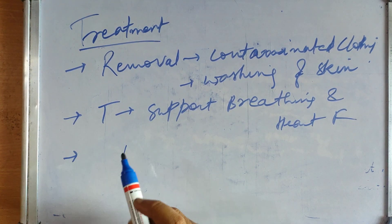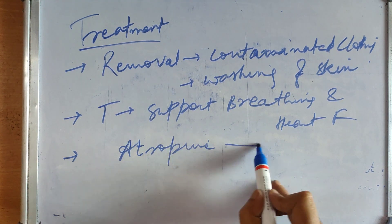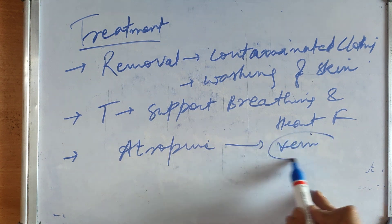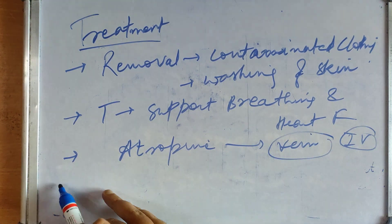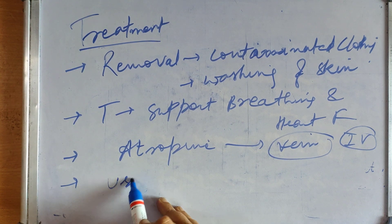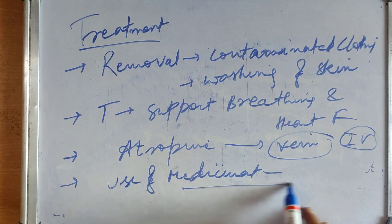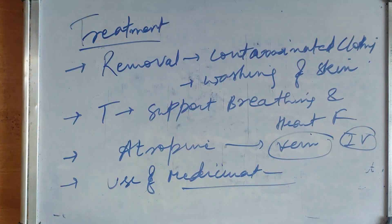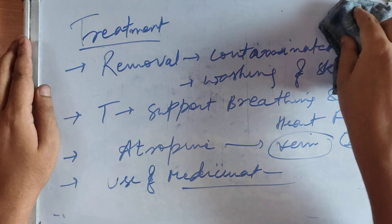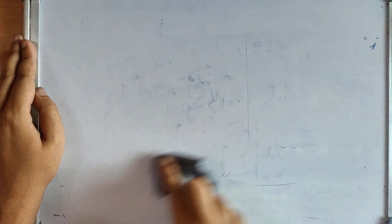We can use atropine. This should be given intravenous, IV atropine to treat this. Use of medications, so a medical diagnosis is important. Use of medicines, you should reach to the doctor. If the symptoms get severe, we should reach the doctor, to the hospital. So this is how we can treat the insecticidal poisoning.